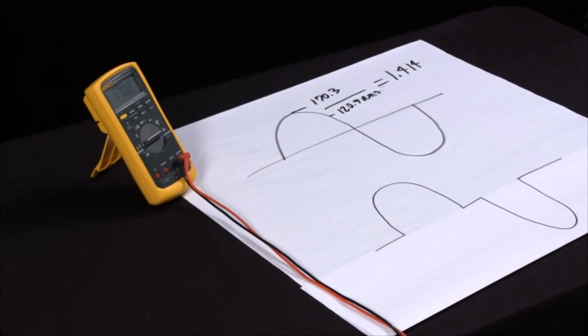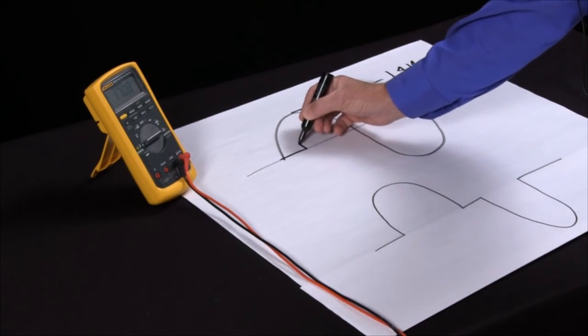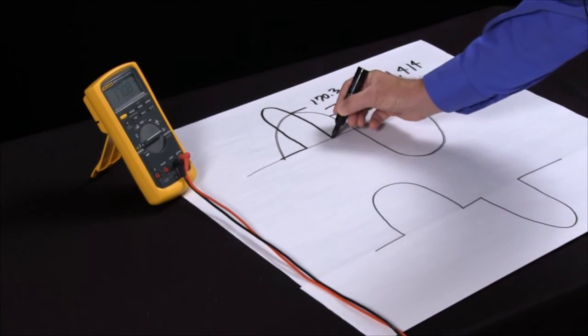Now, if we have a signal that is distorted or has quite a bit of harmonics in it, what happens is the peak gets higher and the RMS gets lower.